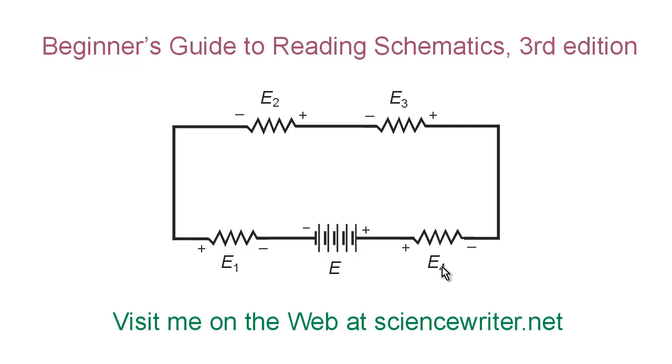Notice that the polarities of the voltages across the resistors are reversed from the polarity of the battery. That is to say, the negative polarity of the voltage on each resistor is the side that's closer to the negative pole of the battery.